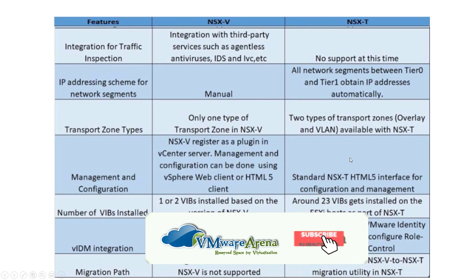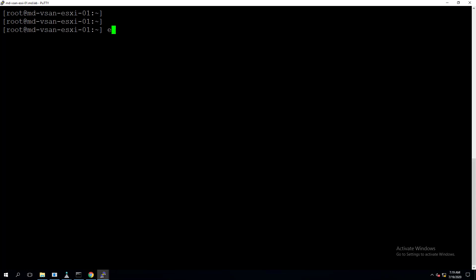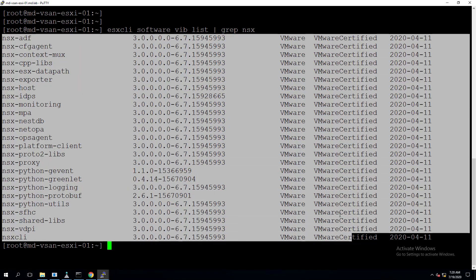For number of VIBs installed: NSX-V installs around two to three VIBs on an ESXi host during host preparation. NSX-T installs around 23 VIBs on the ESXi host. Let me validate by logging into one of my ESXi hosts and running 'esxcli software vib list | grep nsx' — you can see the number of VIBs installed as part of NSX-T preparation.